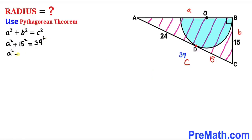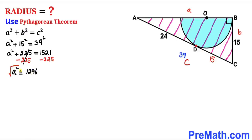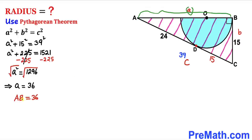Filling in the values: A squared plus 15 squared equals 39 squared, giving us A squared plus 225 equals 1521. Subtracting 225 from both sides, A squared equals 1296. Taking the square root, A equals positive 36. So side length AB turns out to be 36 units.